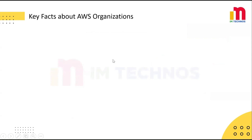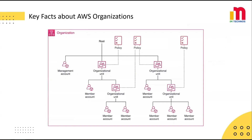Let's see a few practical points that often come up in real-world scenarios, especially when designing your organization structure or applying policies. As we go through these points, let's refer to the diagram from the official AWS documentation, which visually shows how an organization is structured.